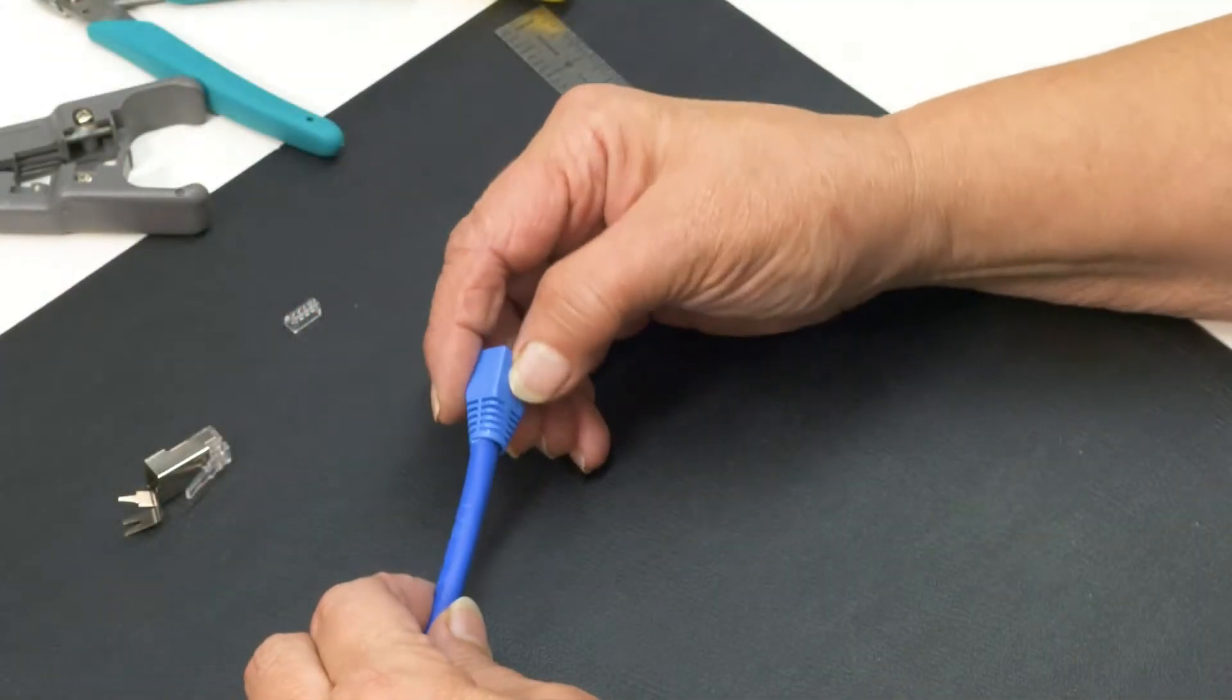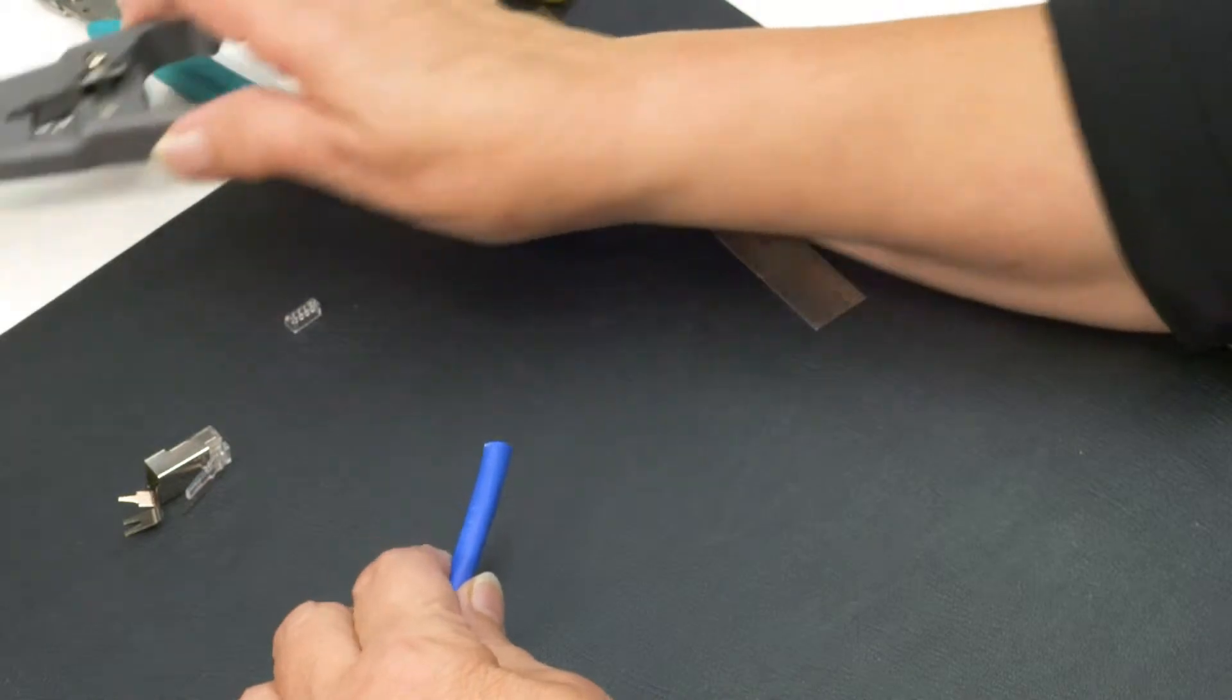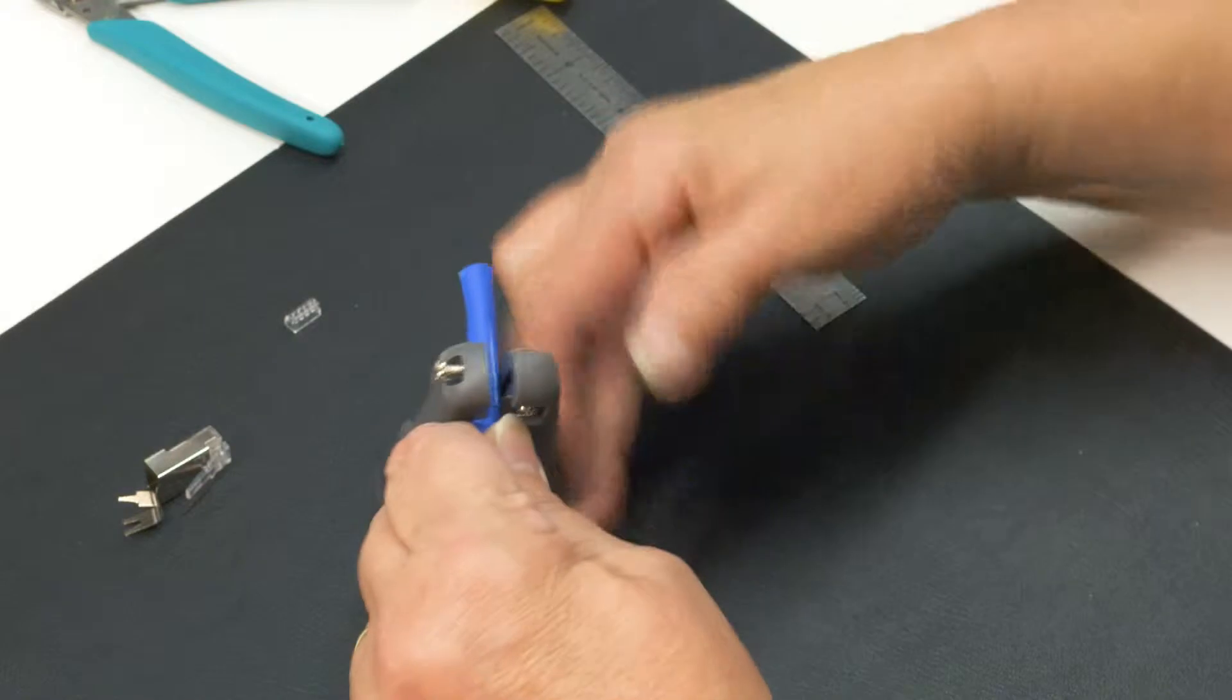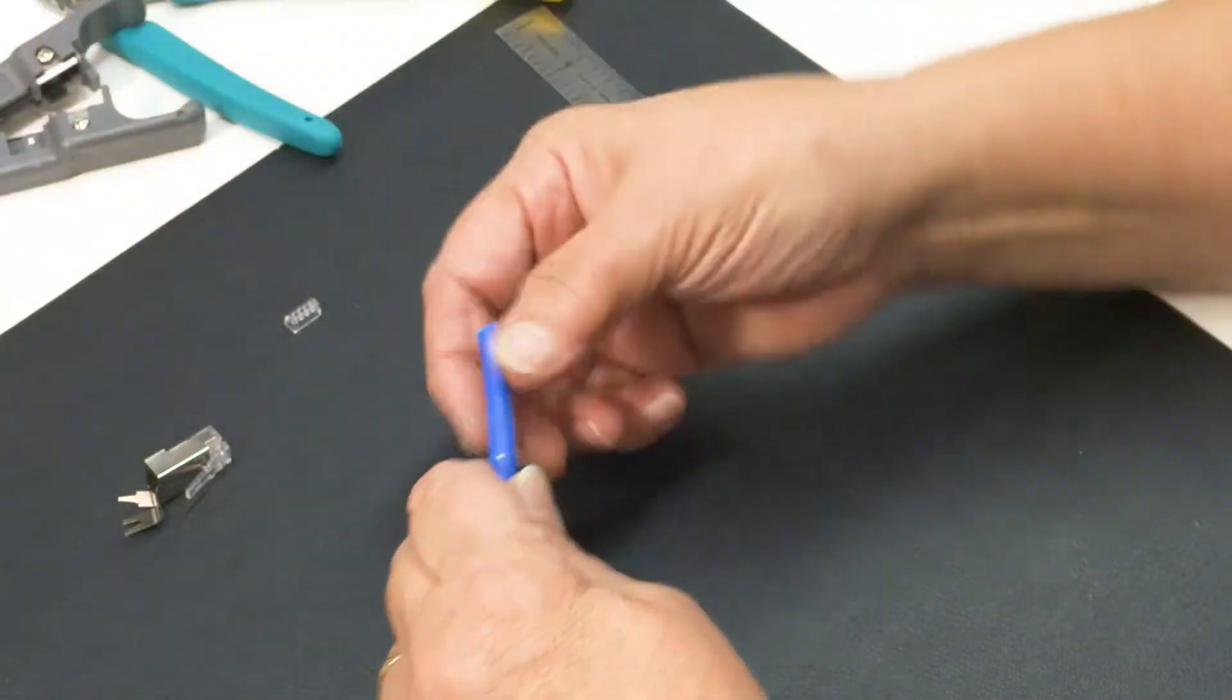First, slide the strain relief boot onto the cable. This boot accommodates larger cables with diameters up to 8 mm. Use a wire cutter and carefully cut away about 1 inch of the cable jacket.